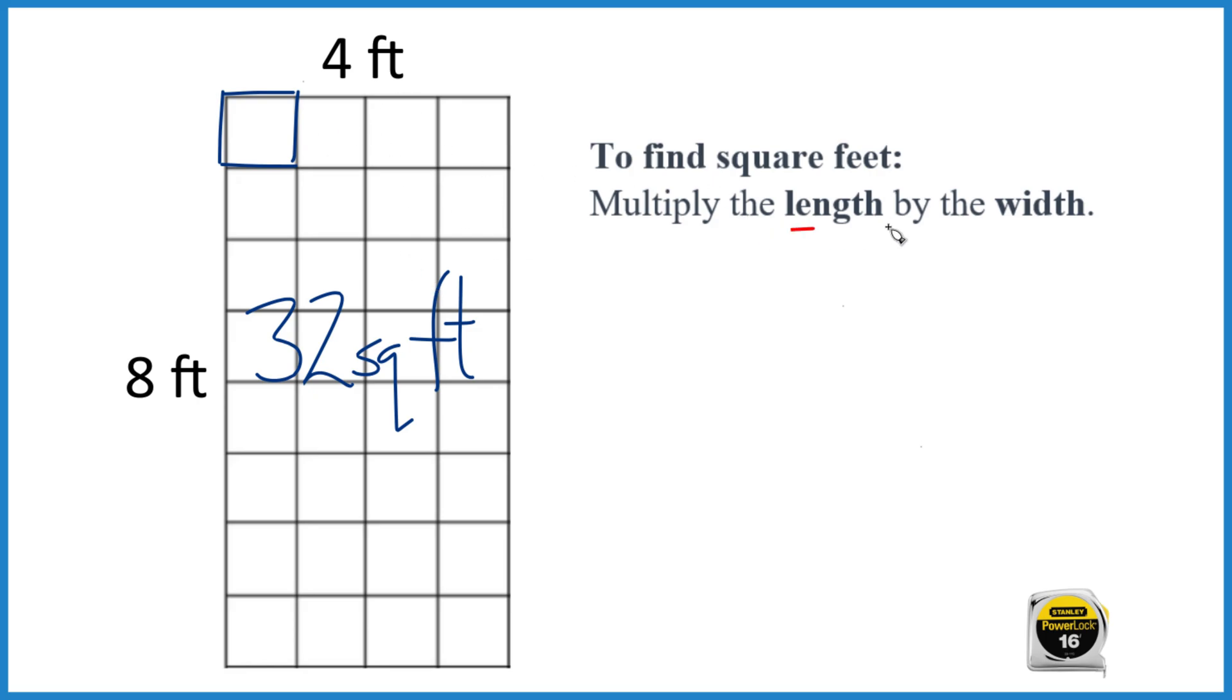Essentially what we're doing, we're taking the length times the width, four feet times eight feet, like this. And when we do that, four times eight, that's 32.